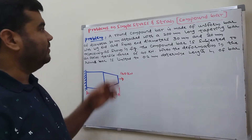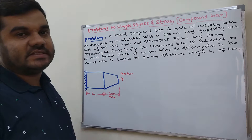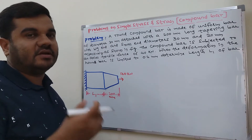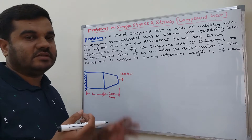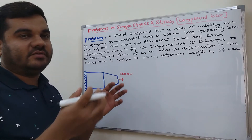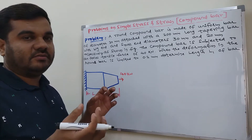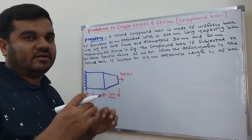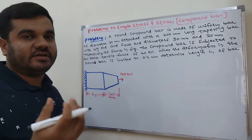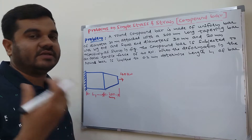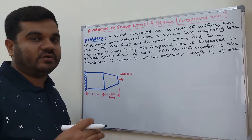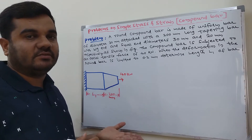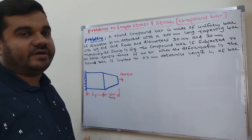In this video, we will solve problems on simple stress and strain. The problem may contain compound bars. Compound bar means the combination of uniform bar or tapered bar, or two uniform bars and one tapered bar. If a combination is subjected to a loading condition like axial tensile load or compression load, we need to find out the deformation or unknown data.